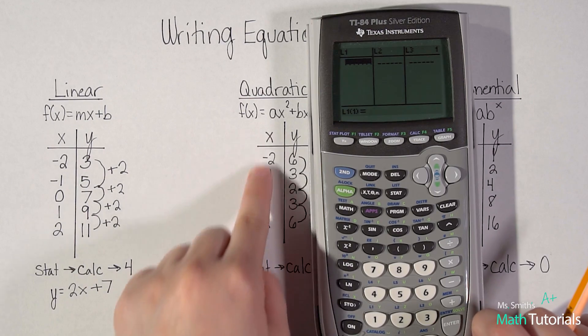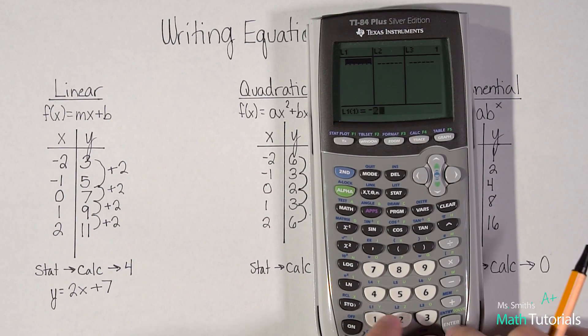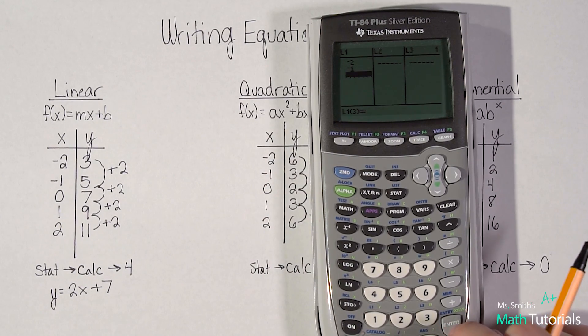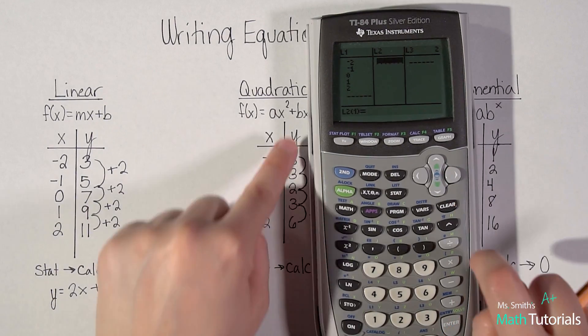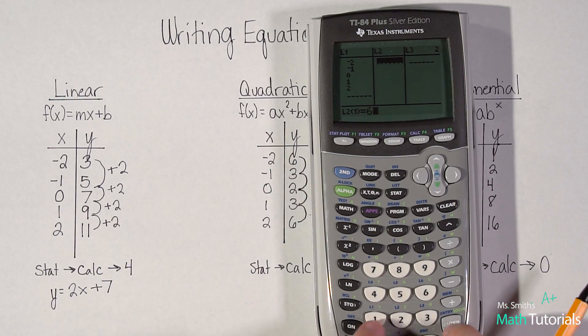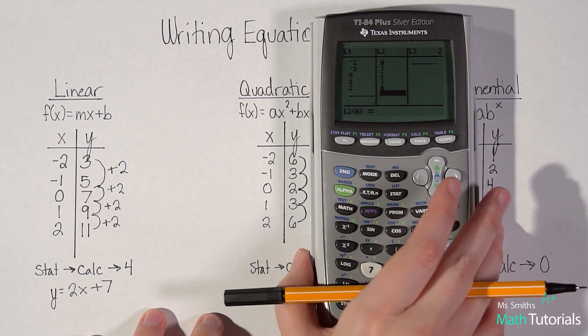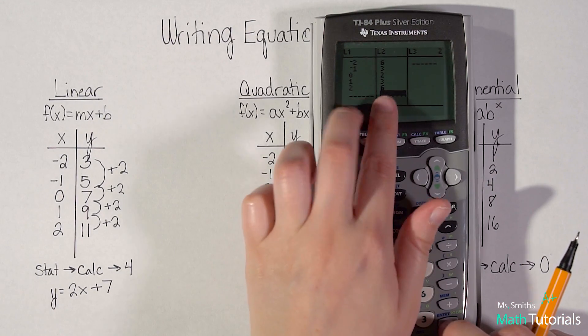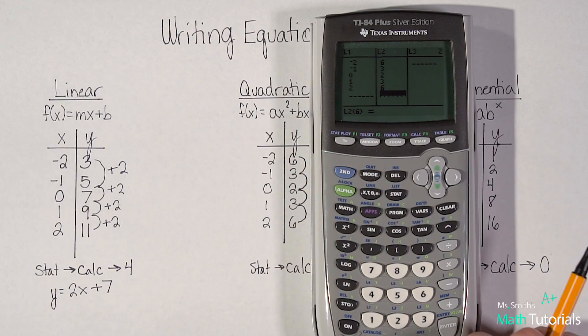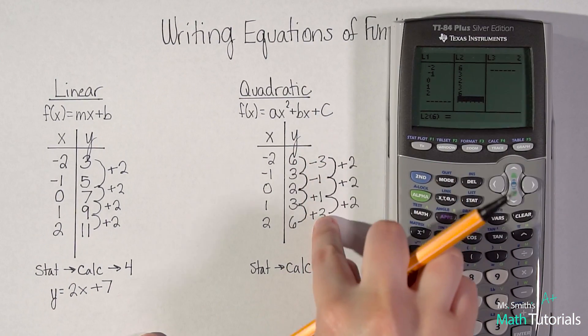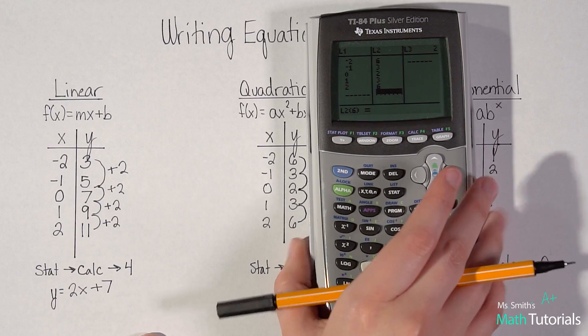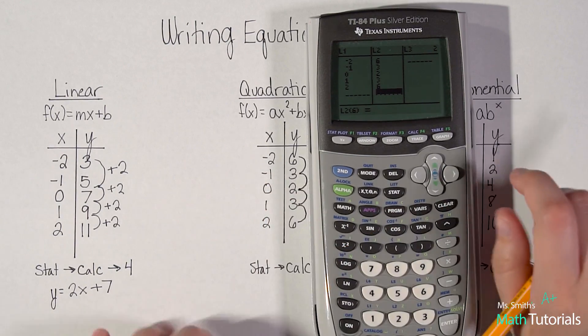Let's see how we could create this equation given this information. Again, clear out that calculator second plus seven, one, two. Go to your stat function, edit. I want to insert my x column. Negative two, negative one, zero, one, two. Now I want to insert my y values, six, three, two, three, six.